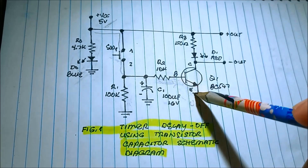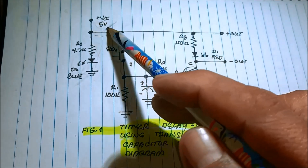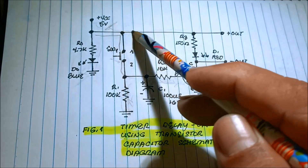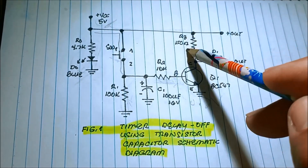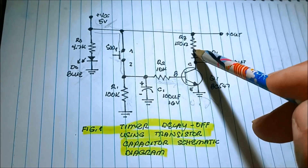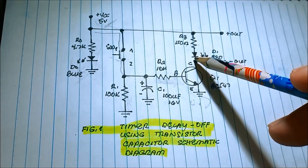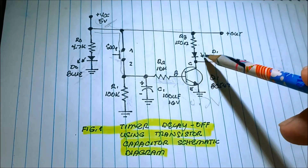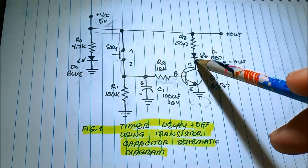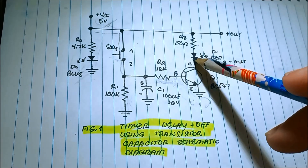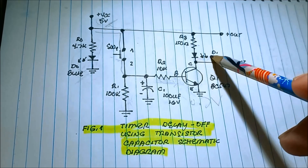When it is on, the current will flow into the 150-ohm R3 resistor — current limiting resistor — to the output LED red, turning it on.